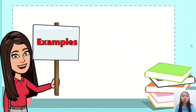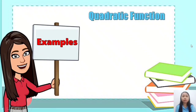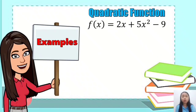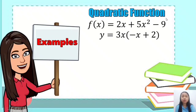Let's have more examples of quadratic functions in terms of an equation. First, f of x is equal to 2x plus 5x squared minus 9. Though it is not written in standard form, it's still a quadratic function because the degree of this polynomial function is 2. Second, y is equal to 3x multiplied by negative x plus 2 is still a quadratic function. Applying the distributive property gives us y is equal to negative 3x squared plus 6x, which is also a second-degree polynomial function.